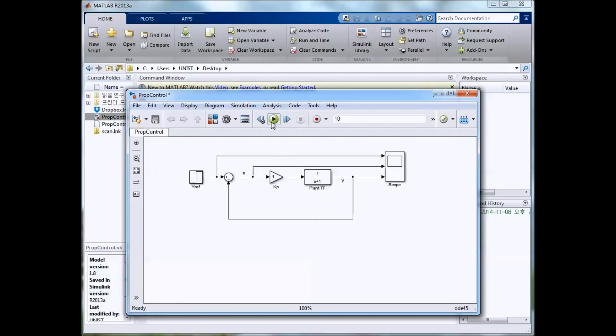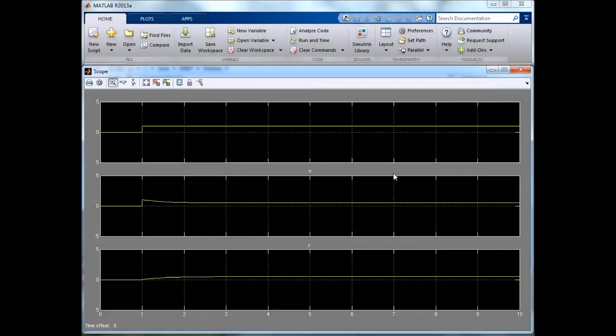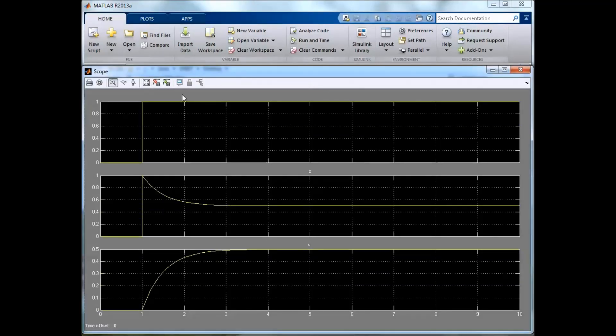Here this is just proportional control. When we ran this, we can see that we have a steady state error. Again, this is our input, our y_ref, this is our error, and we see that it stabilizes to some error value that is not zero.